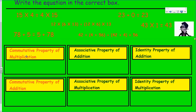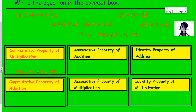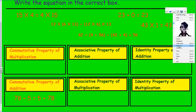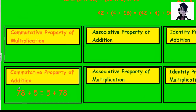The commutative property states that how you order the terms won't change the product or the sum. For example, 2 plus 3 equals 3 plus 2 — you're not changing the value. Looking up here I see 78 plus 5 equals 5 plus 78. That's addition, so this is the commutative property of addition. We switch the 78 and the 5.